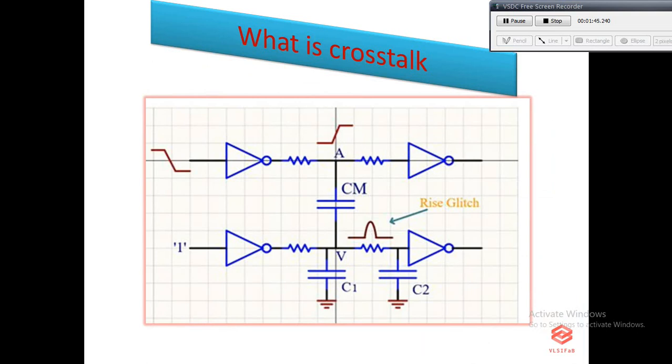Hence, there is capacitive coupling between the nets that can lead to logic failures and degradation of timing in VLSI circuits. Crosstalk is a phenomenon by which a logic transmitted in a VLSI circuit or net can create undesired effects on neighboring circuits or nets.